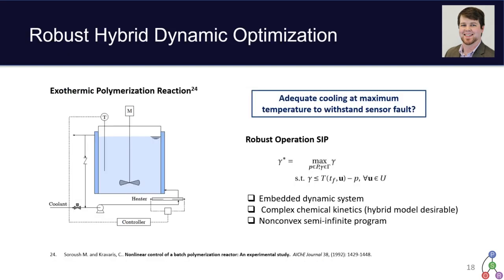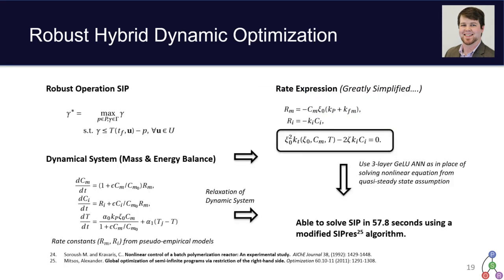So just to look at how this integrates with EAGO's overall functionality of solving fairly complex script-defined optimization problems. We're going to look at this exothermic polymerization reactor example, where we're really considering whether once this reaction is going, it hits its peak temperature. If a sensor were to fault, would that sensor fault essentially throw us outside the realm of a controllable system at that particular time step? So we can formulate this as a robust optimization SIP. Again, it embeds this dynamical system, which is just going to be a mass and energy balance associated with that chemical reacting system.